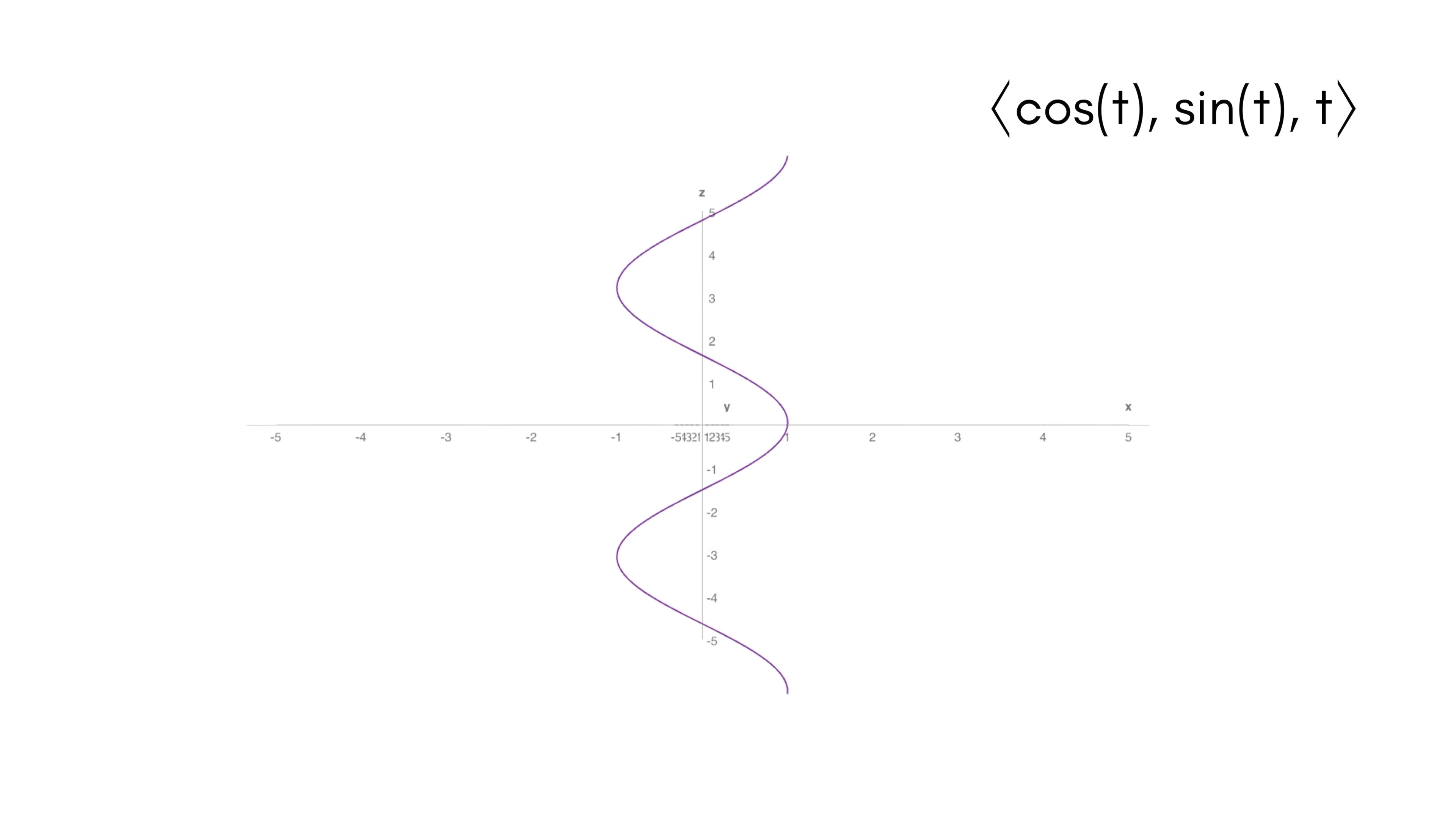Similarly, if we ignore the x component and just look at the y and z, y is sine, and so we should be seeing a sine graph here.